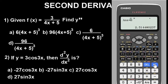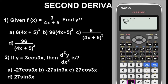Press equals to compute the second derivative value. Store this new value as B — press Store then B. We are good to go. Now wipe out everything and compute the final result.